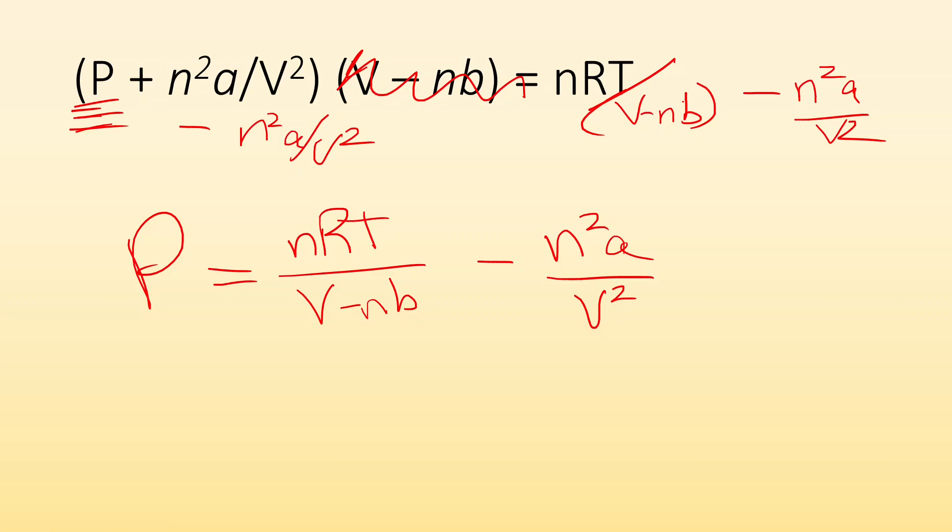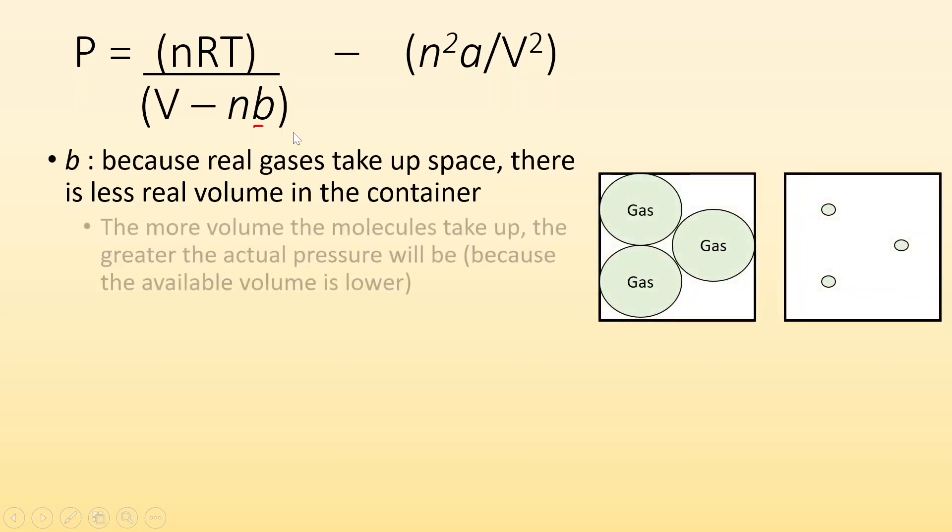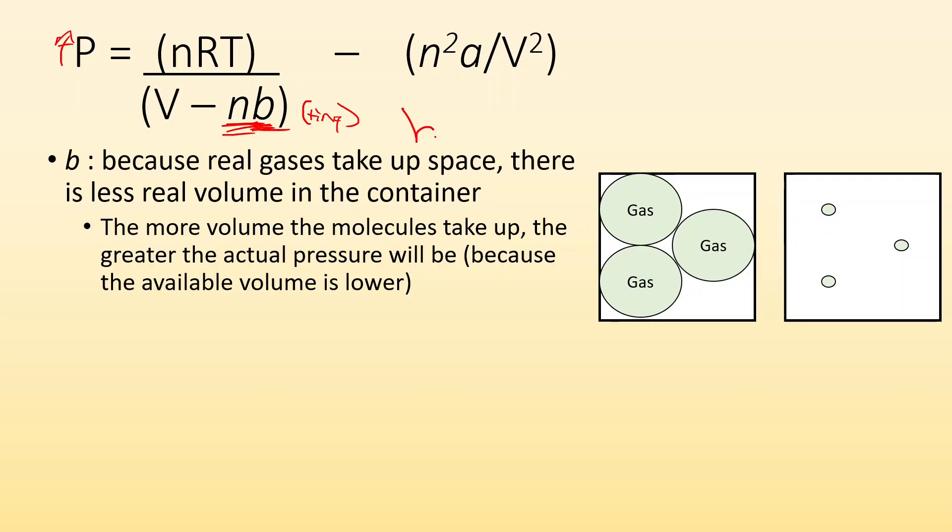Let's see what happens to the pressure when we account for these real factors. Now that we have it rearranged to solve for pressure, let's see how the different corrections affect the overall pressure. We know b is accounting for the fact that real gases take up space and there is less real volume in the container. Let's say that we had a really big value for b. Volume minus a really big number is going to end up with a really tiny number, which means my pressure will have gone up. The bigger the volume of the gas, the greater the pressure is actually going to be because the available volume is lower.